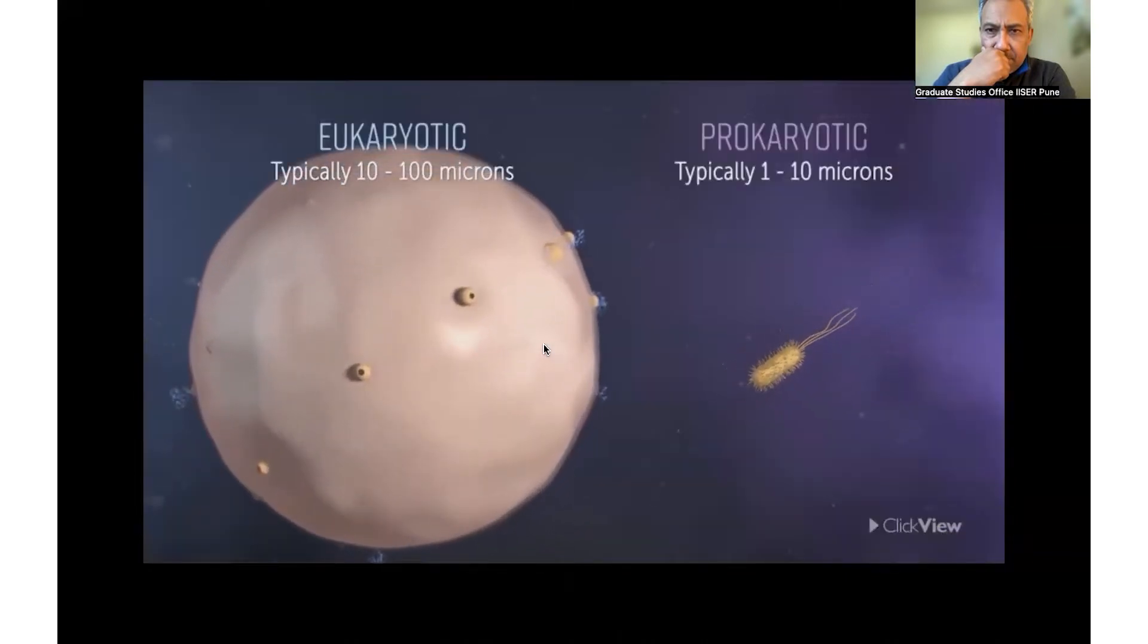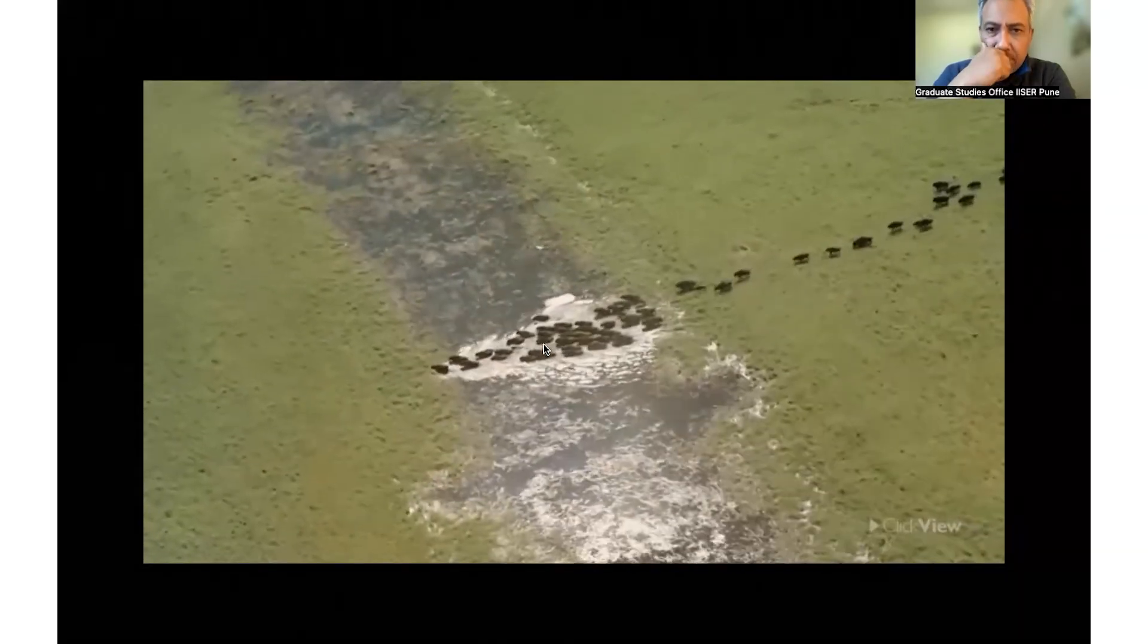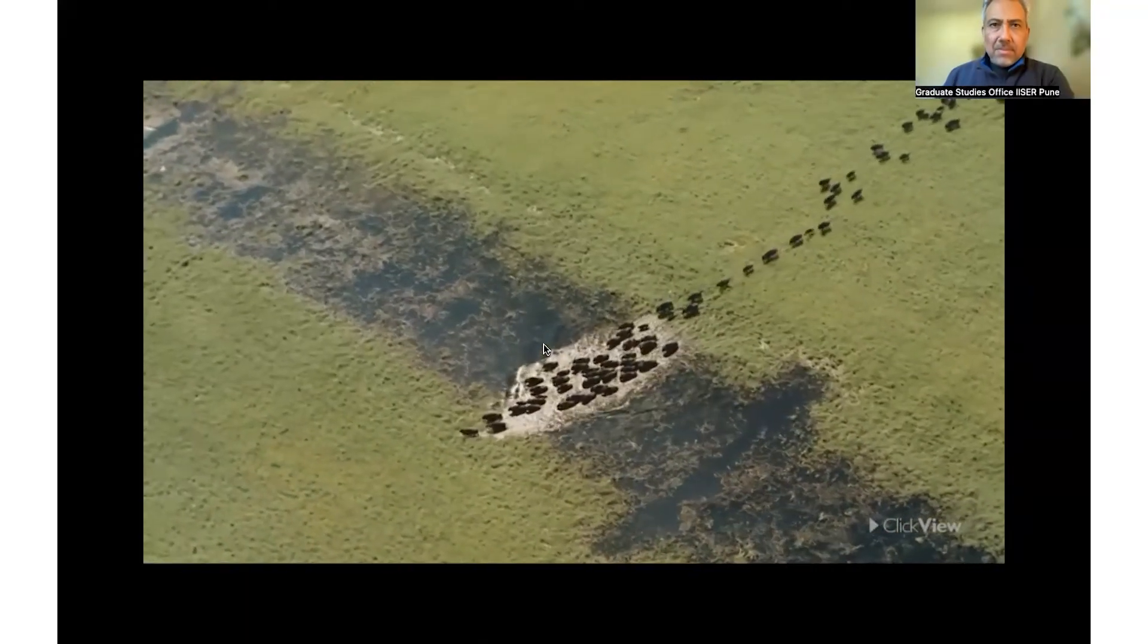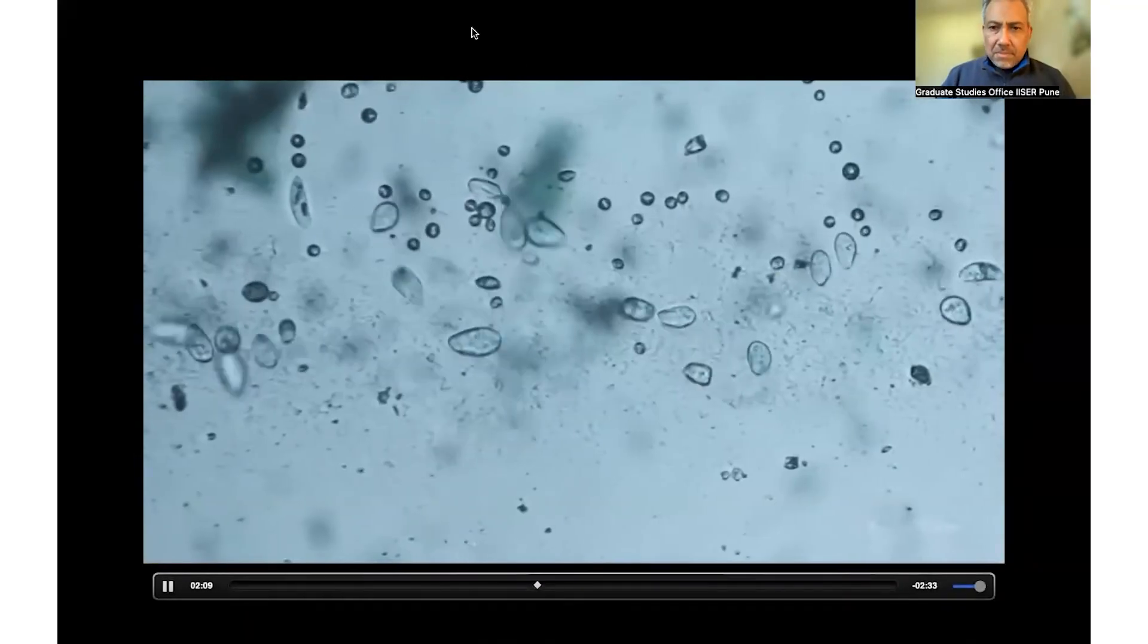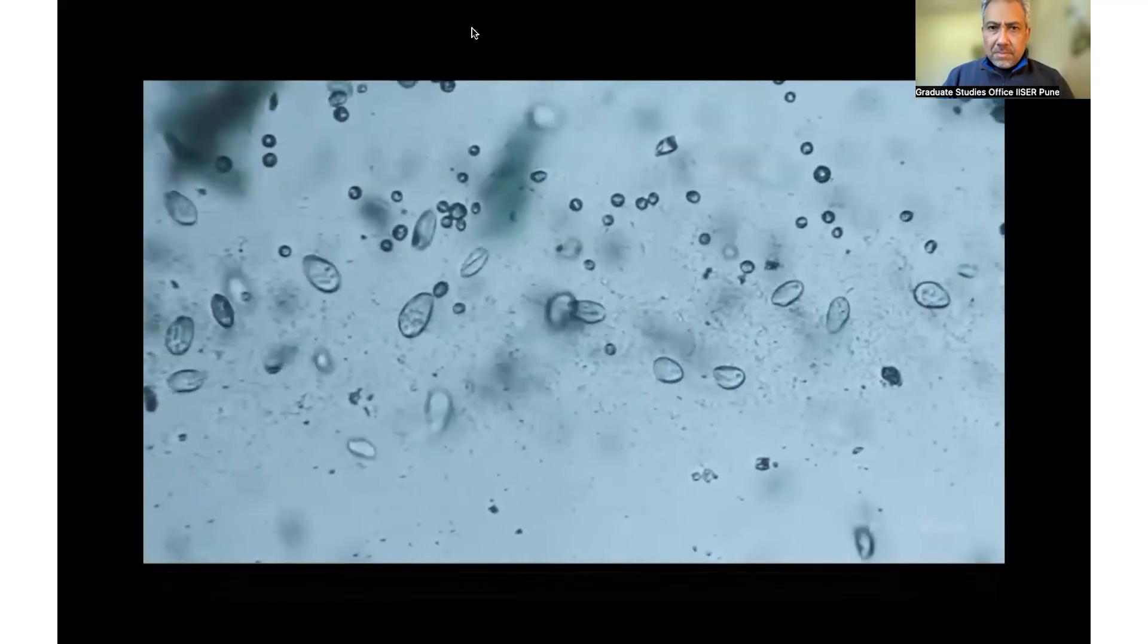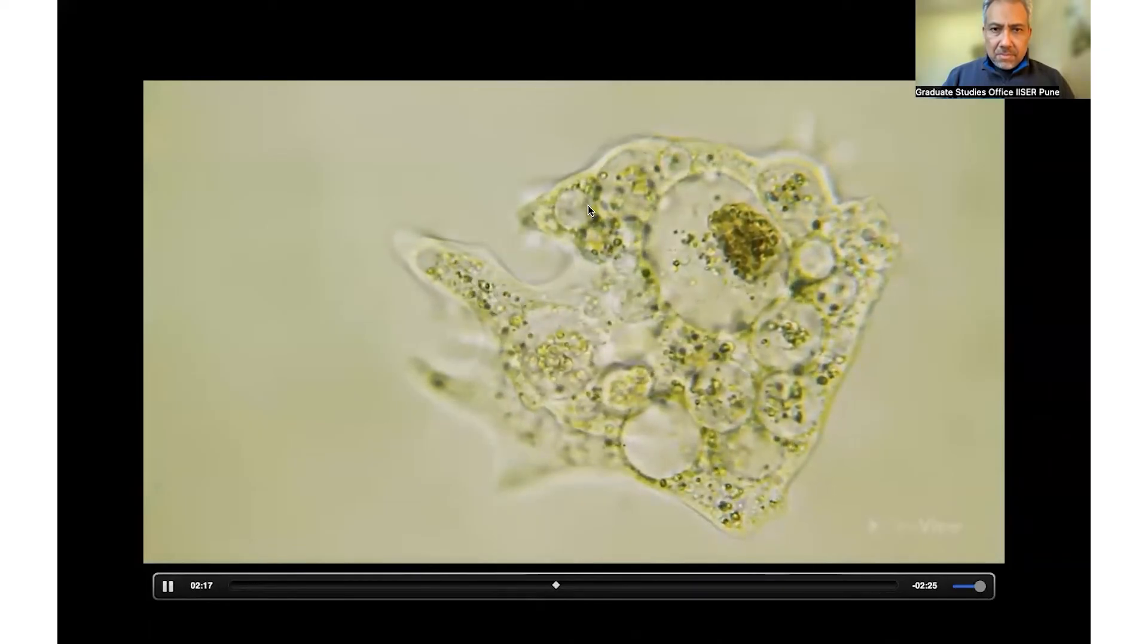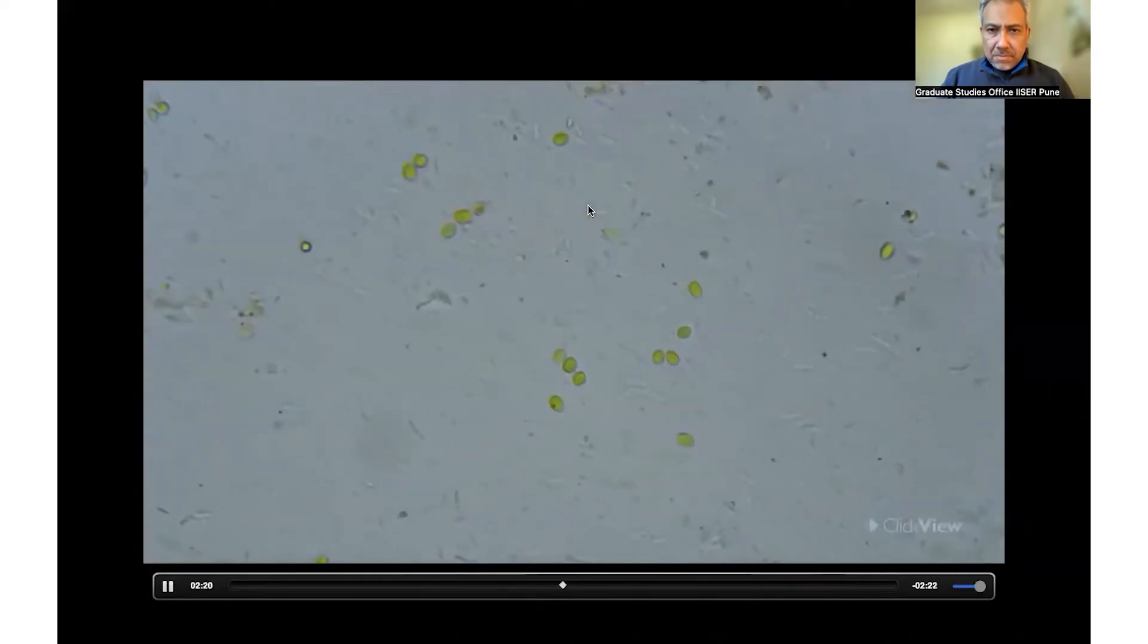Another difference between eukaryotic and prokaryotic cells is their size. Eukaryotic cells are generally larger than prokaryotic cells. Eukaryotes are mostly, although not entirely, multicellular organisms, whereas prokaryotes are always single-celled, or unicellular organisms. Examples of unicellular eukaryotes include amoebas, paramecium, and yeast.